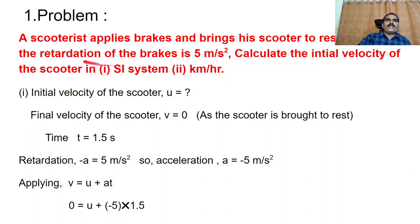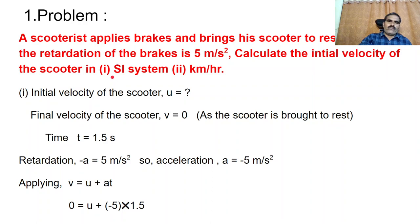If the retardation of the brakes is 5 meters per second square, calculate the initial velocity of the scooter in the SI system and also convert that velocity into kilometers per hour. Before doing the problem, you have to write the given values. Read the problem carefully.